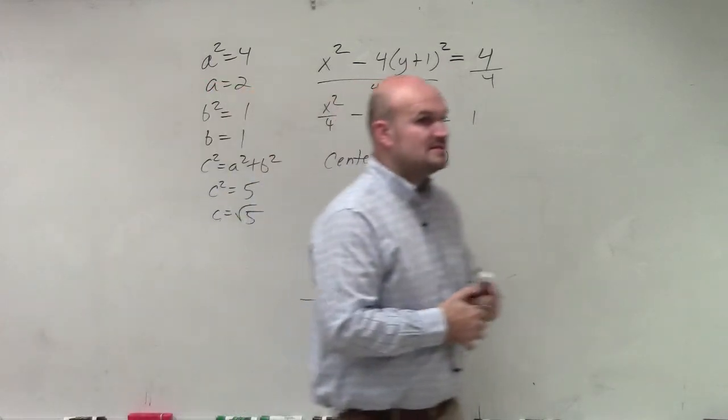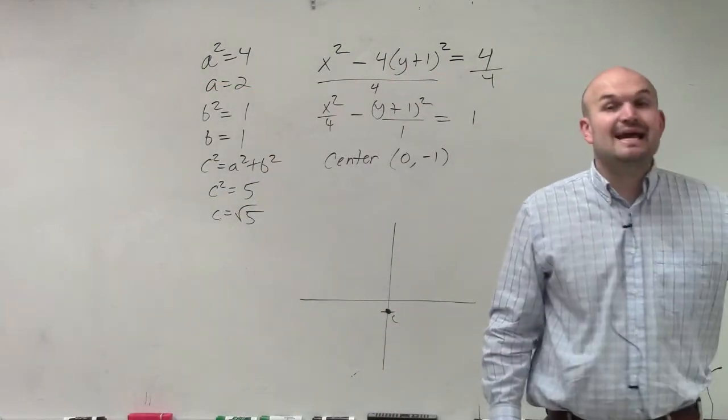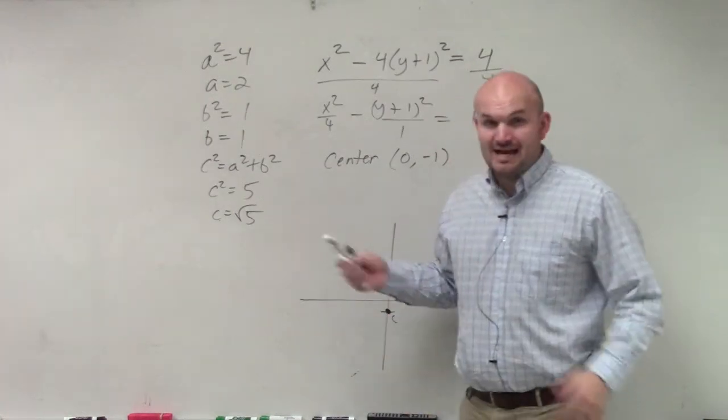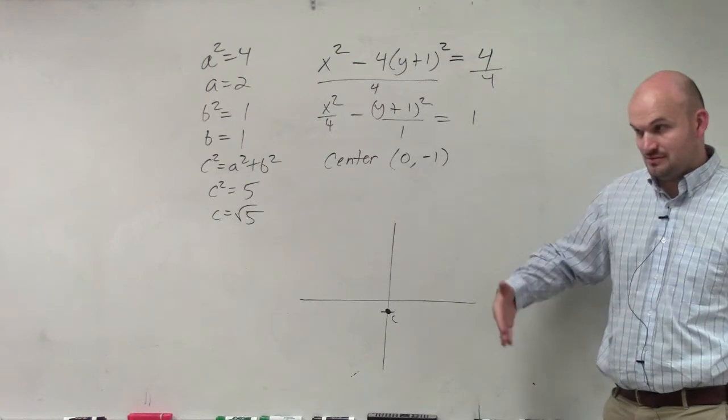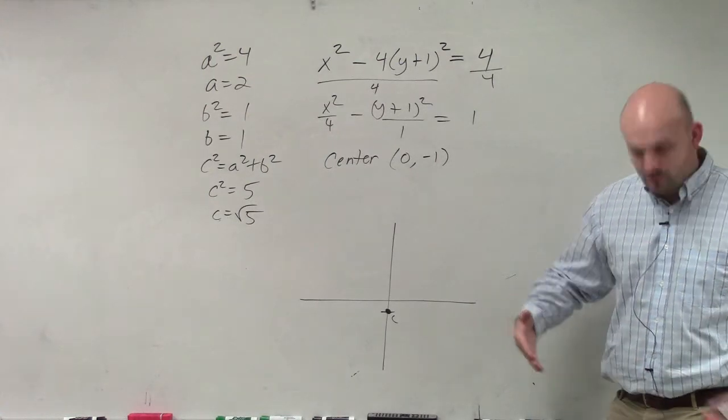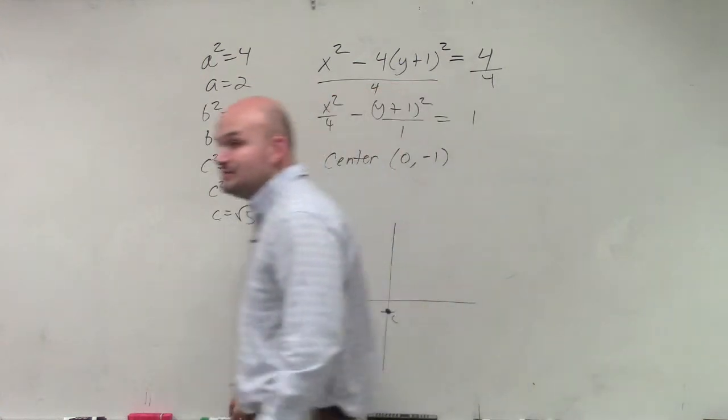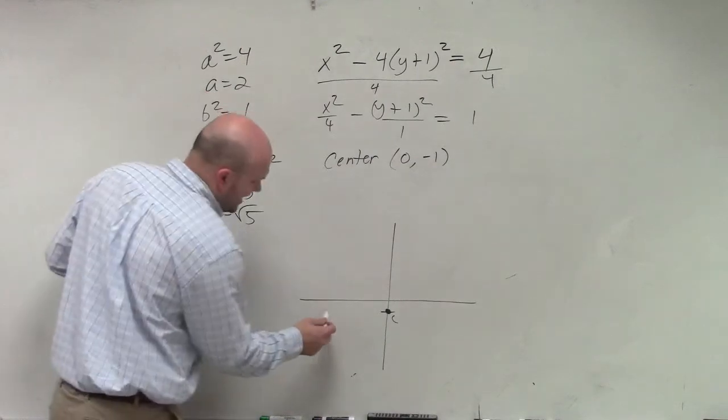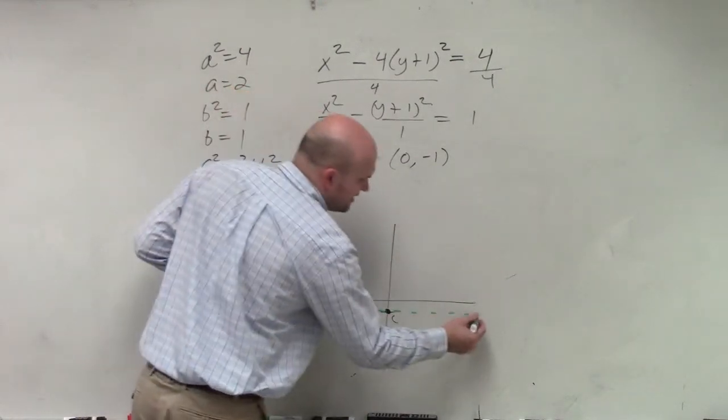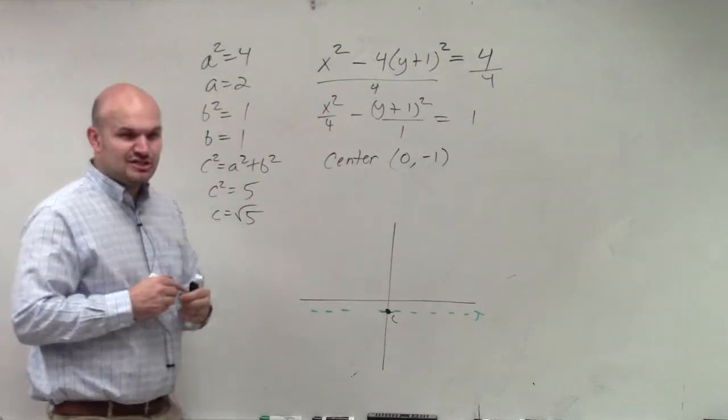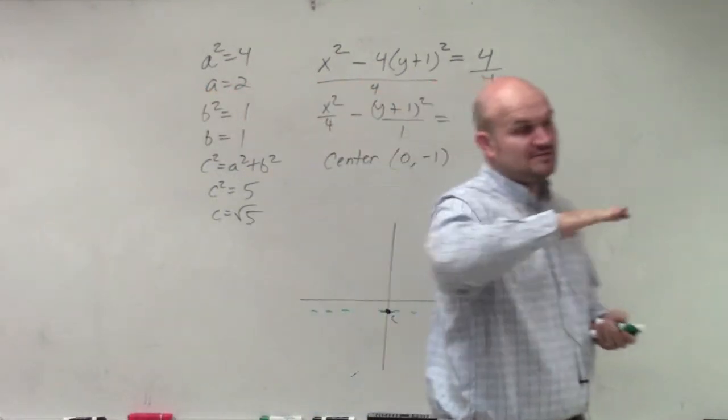Now, since my a squared is under my x, should my transverse axis be horizontal or vertical? Horizontal. So you don't have to do this, but I like to do it to avoid making mistakes. I just sketch a nice little axis and label it with a t. That triggers my brain to say the transverse axis is horizontal.